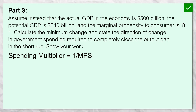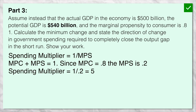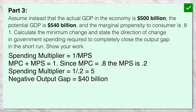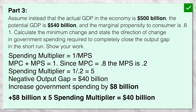The first thing you had to be able to do is calculate the spending multiplier. It's one over the marginal propensity to save. Since the marginal propensity to consume was 0.8, the marginal propensity to save is 0.2, so one over 0.2 is five — that's the spending multiplier. This question says assume instead they're talking about a different situation when the economy has a negative output gap. The potential GDP is $540 billion and the actual GDP is only $500 billion, so there's a gap of $40 billion. If the spending multiplier is five and the negative output gap is $40 billion, we have to increase government spending by a minimum of $8 billion. Eight times five is $40 billion, and that could close that negative output gap.